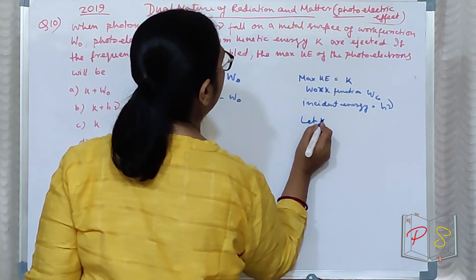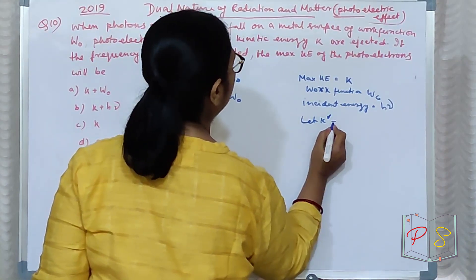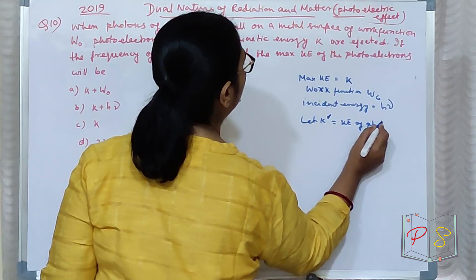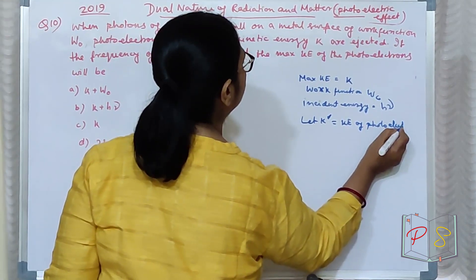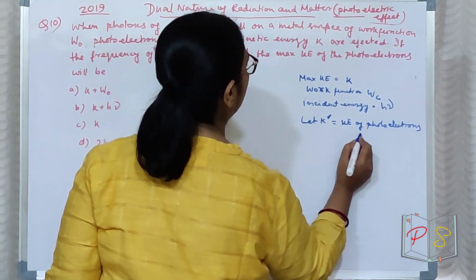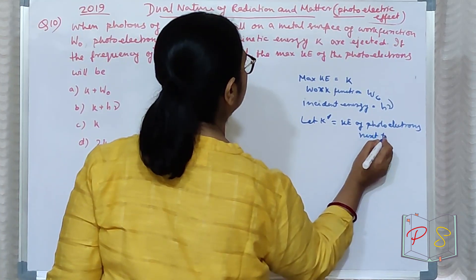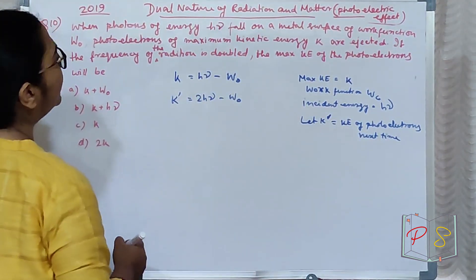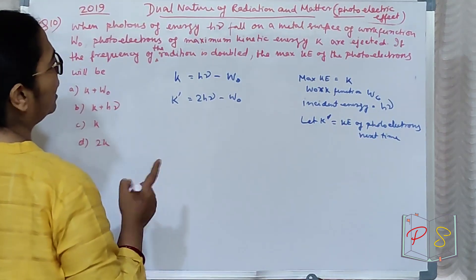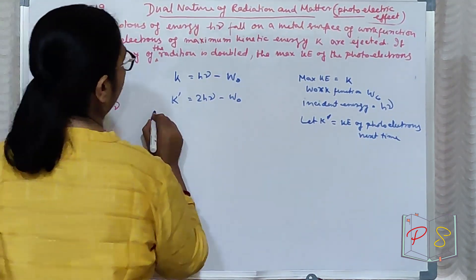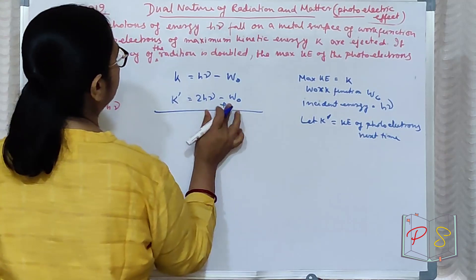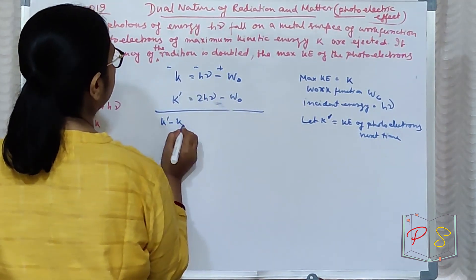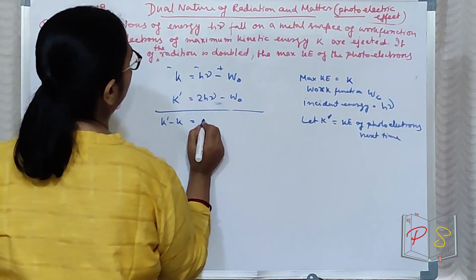Suppose K', let K' equal to kinetic energy of photoelectrons next time. Frequency to double kar diya. To, K ka value kya hai? Woha aapko nikal na ke liye bola hai. Work function se mujhe kuch lena dena nahi hai. To, K' minus K equal to hν.